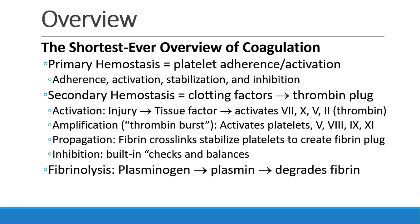There is an activation step, where the injury leads to release of tissue factor and activation of factors 7, 10, 5, and 2, factor 2 being thrombin. Then there's amplification, which we call the thrombin burst. This activates the platelets, as well as factors 5, 8, 9, and 11. Propagation is the creation of the fibrin crosslinks, which stabilize the platelets and create a fibrin plug. And finally, there's inhibition, which is the built-in checks and balances that break down clot as well as forming it.